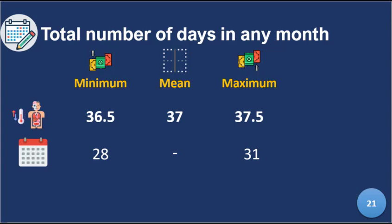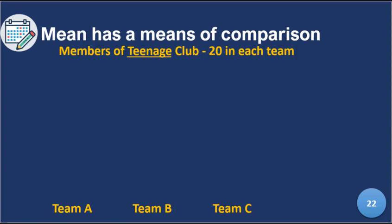Now let's look at a teenage club. A teenager is someone between the ages of 13 to 19. Mean basically means average — if you add up all the ages of people in the group and divide by the number of people, it gives you an average age.